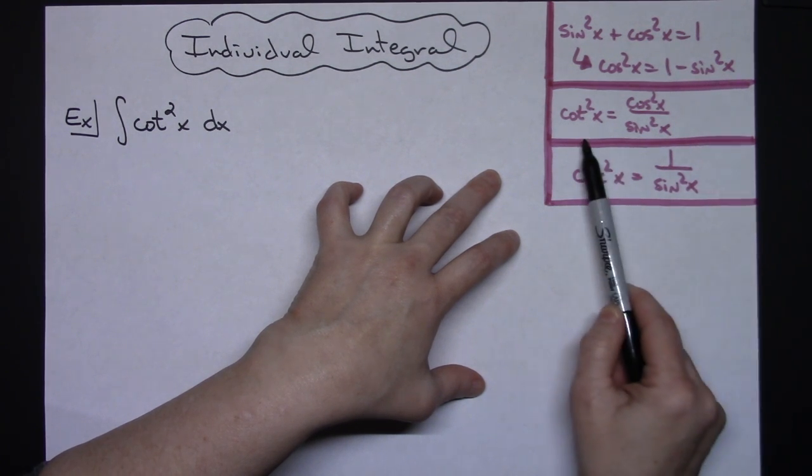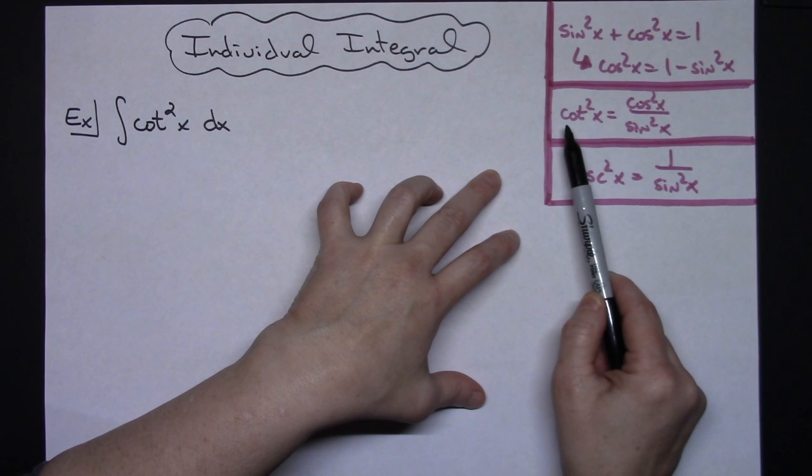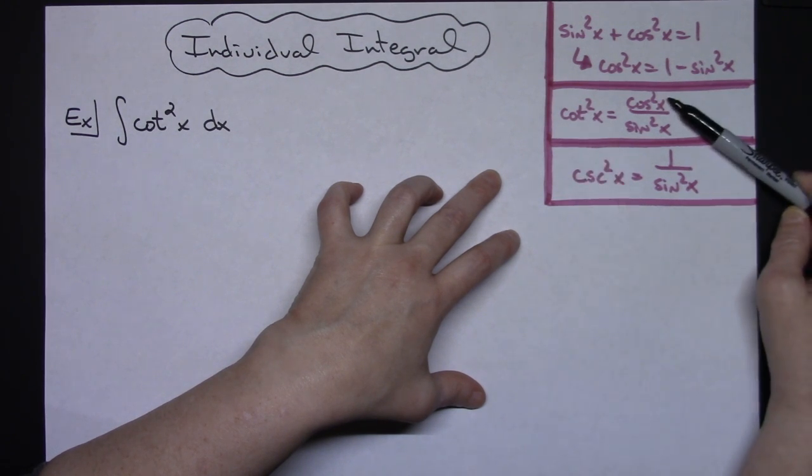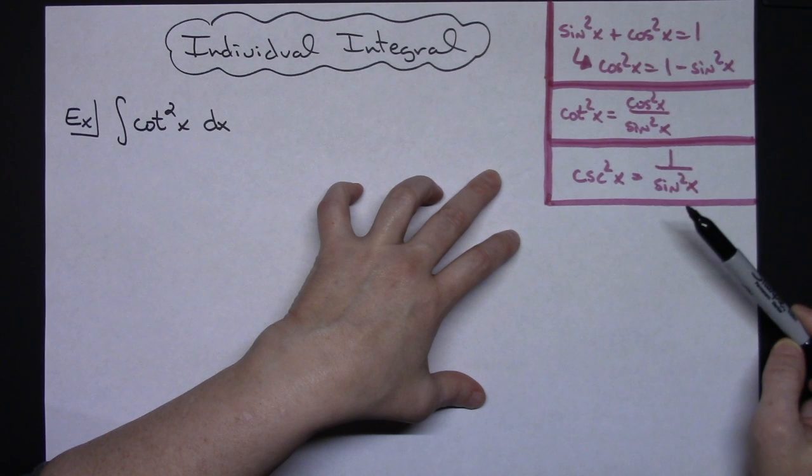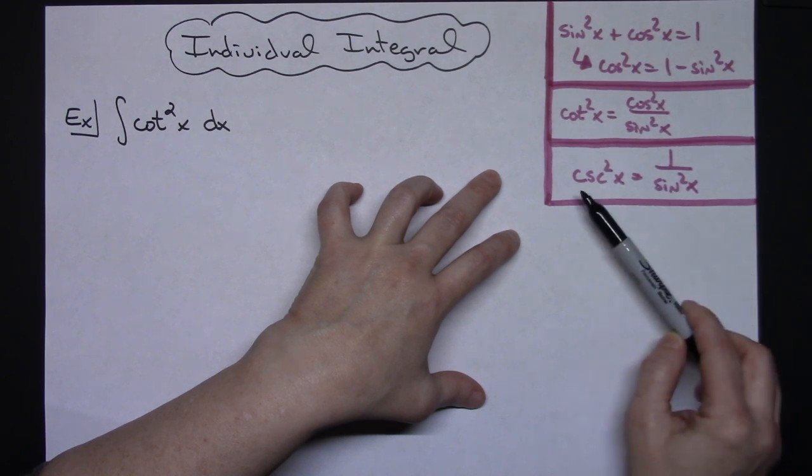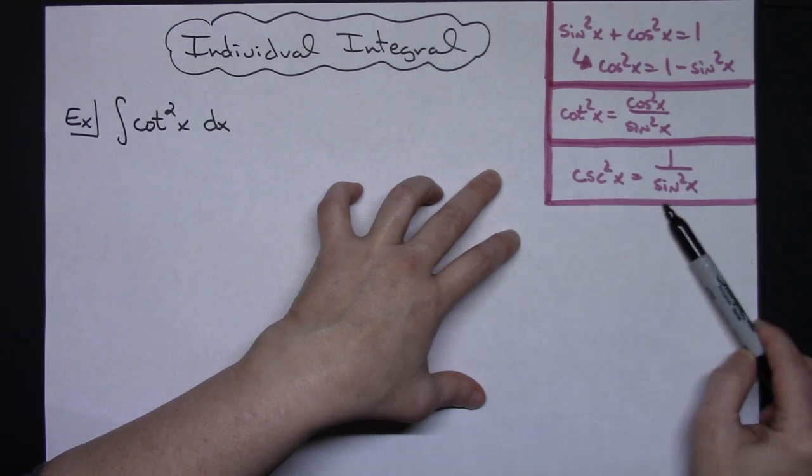You should also have your quotient identity memorized. So cotangent squared x is equal to cosine squared x over sine squared x. And then your reciprocal identities, cosecant squared x is equal to 1 over sine squared x.